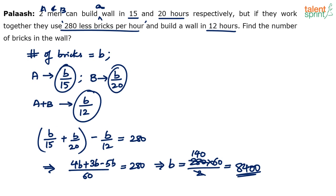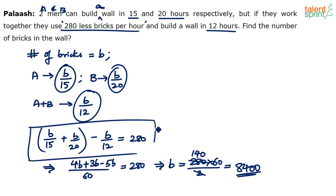The number of bricks B is 8400. The equation we used clarifies the question: when working together they use fewer bricks per hour — B/15 is A's rate, B/20 is B's rate, and B/12 is their combined rate. That difference equals 280, giving us the answer. That's the solution.